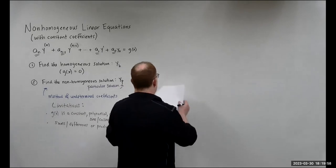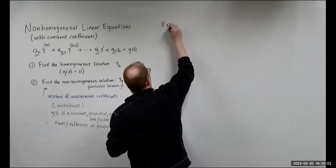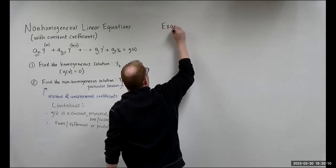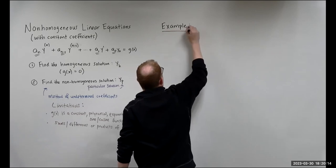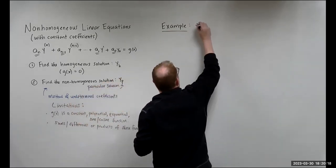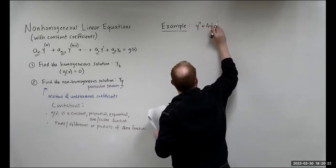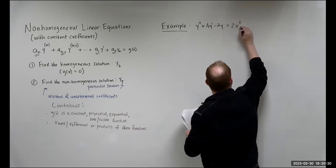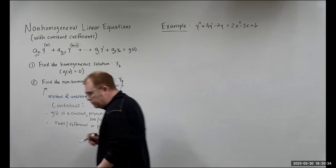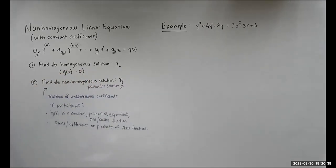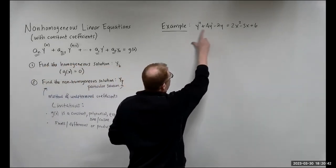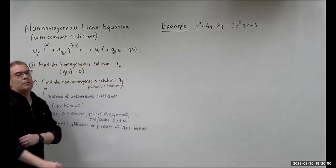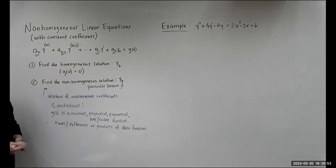Let's do an example. We want to solve the differential equation y'' + 4y' - 2y = 2x² - 3x + 6. We have constant coefficients 1, 4, -2, and a degree-2 polynomial on the right-hand side.